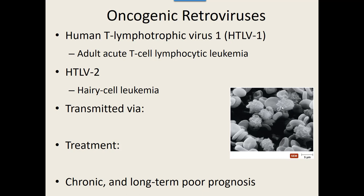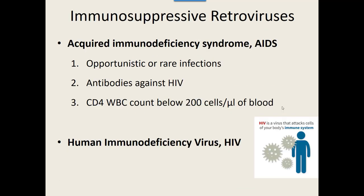The second group of retroviruses are the immunosuppressive retroviruses. What they eventually cause is a condition known as AIDS — AIDS is not a virus, it's a condition in the body. It stands for acquired immunodeficiency syndrome — you have acquired the lack of an immune system. Things that mean you have acquired immunodeficiency syndrome include picking up opportunistic or rare infections that healthy immune systems don't get, having antibodies against the virus that causes AIDS, and having your CD4 helper T-cell count below 200 cells per microliter — not enough to recognize and stimulate your immune system to fight things off.